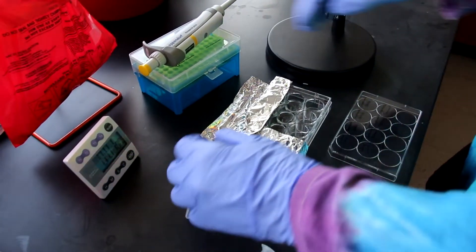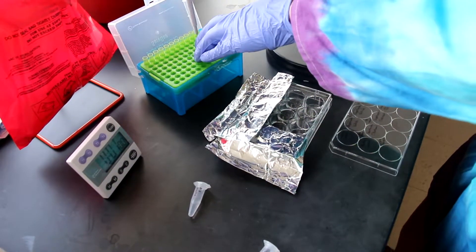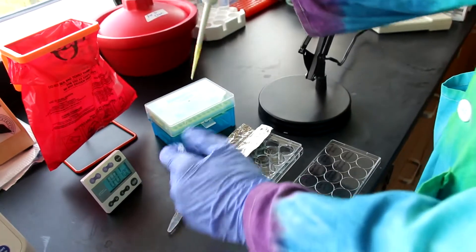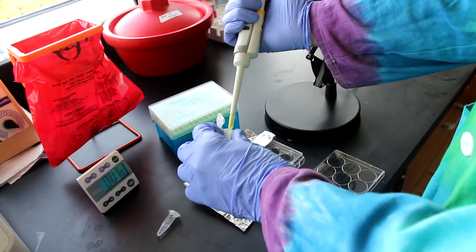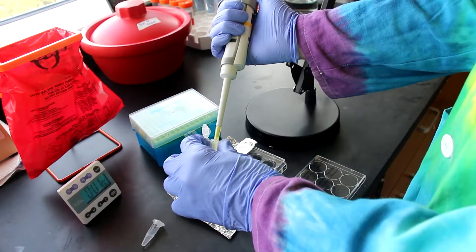Then as before, using a P20 pipette, add 20 microliters to each well quickly, wait five seconds, and then photoconvert for a minute.